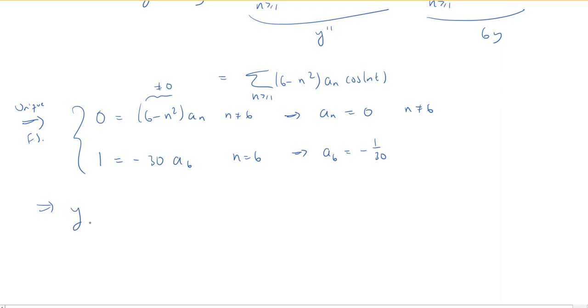Therefore, my Fourier series for y is going to be, well, there's just the one non-zero coefficient. Everything is 0 except a_6. So we have -1/30 cos(6t), because again, this is the n equals 6 term.